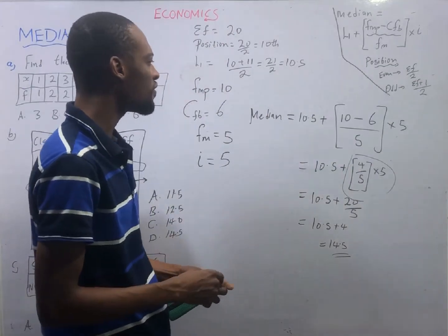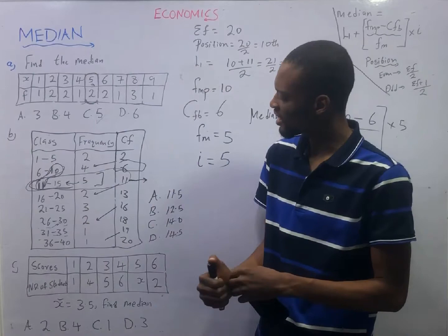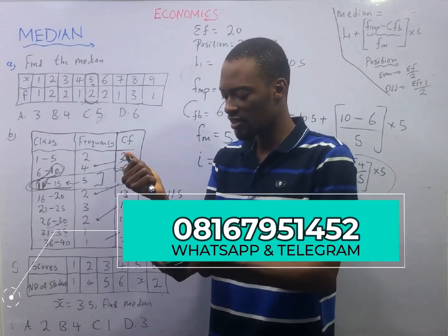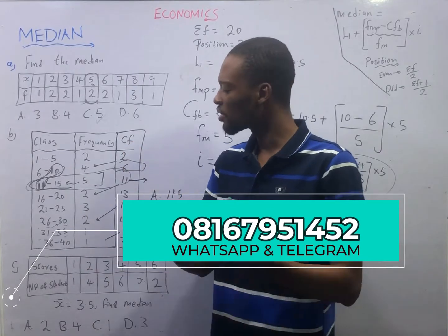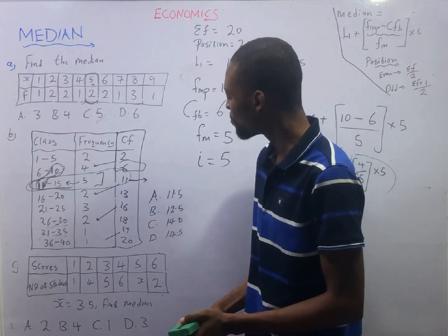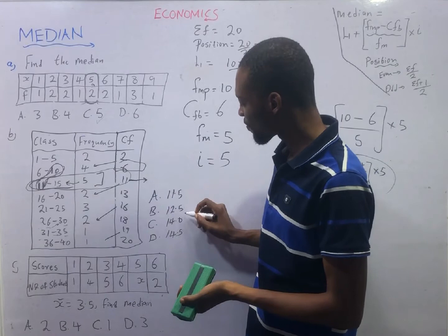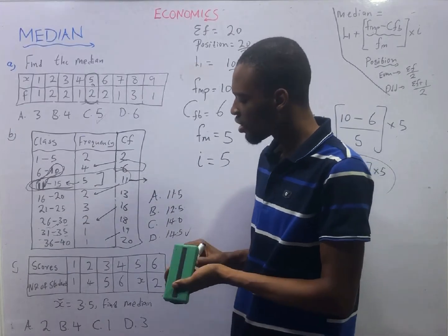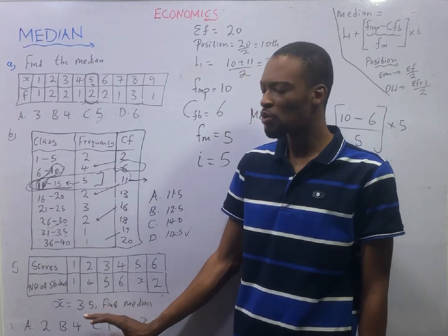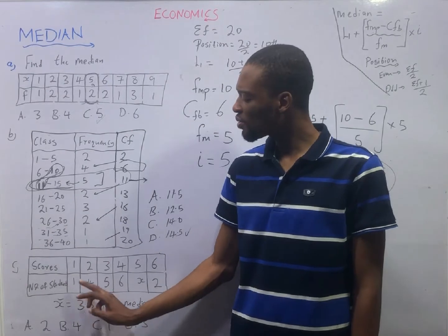Ladies and gentlemen, read everything possible to make sure you understand. If at this point you still don't understand, contact me - WhatsApp, Telegram, Facebook - I will answer you. My aim is for you to pass and understand very well. For this last question you are given scores and number of students; I tried to combine median and mean here.